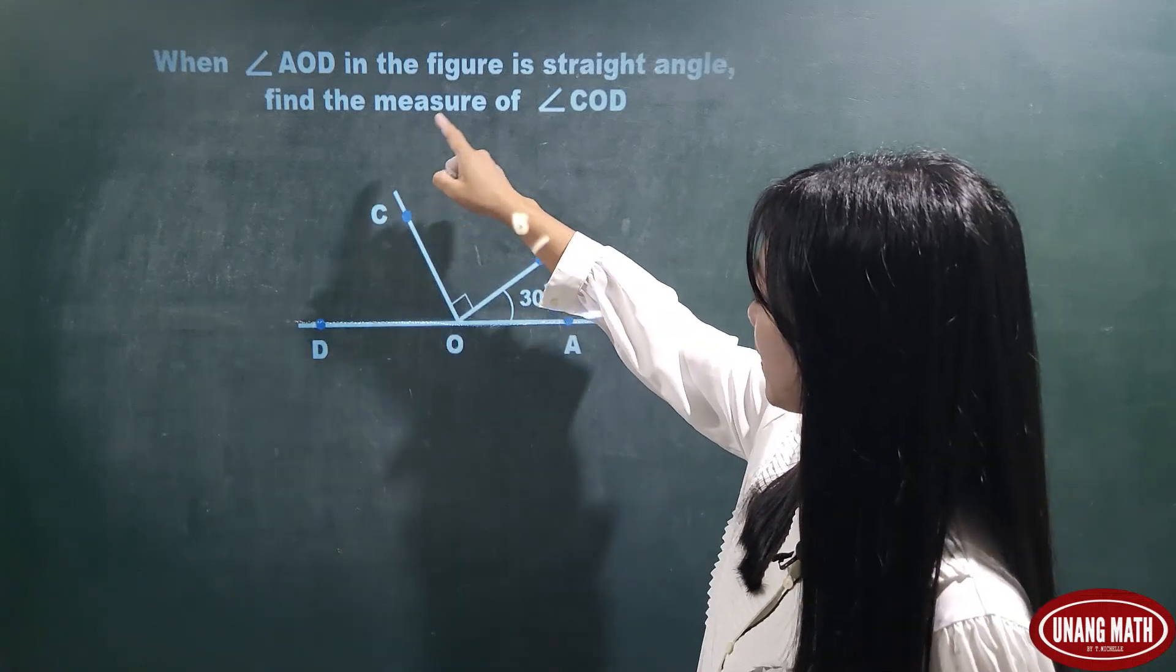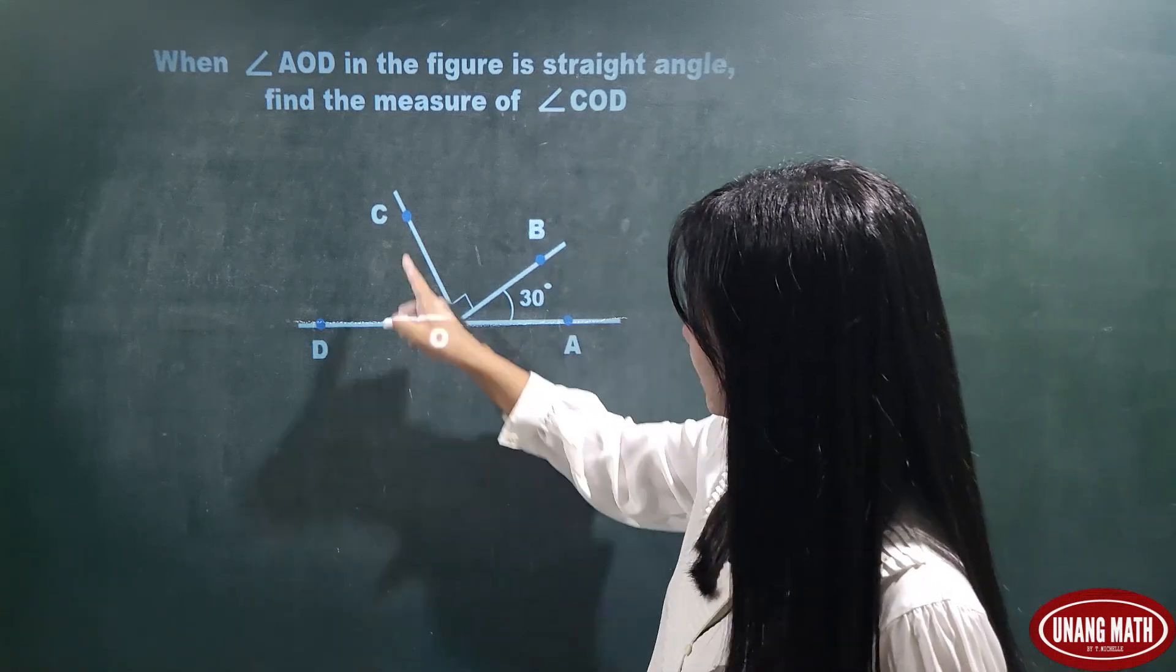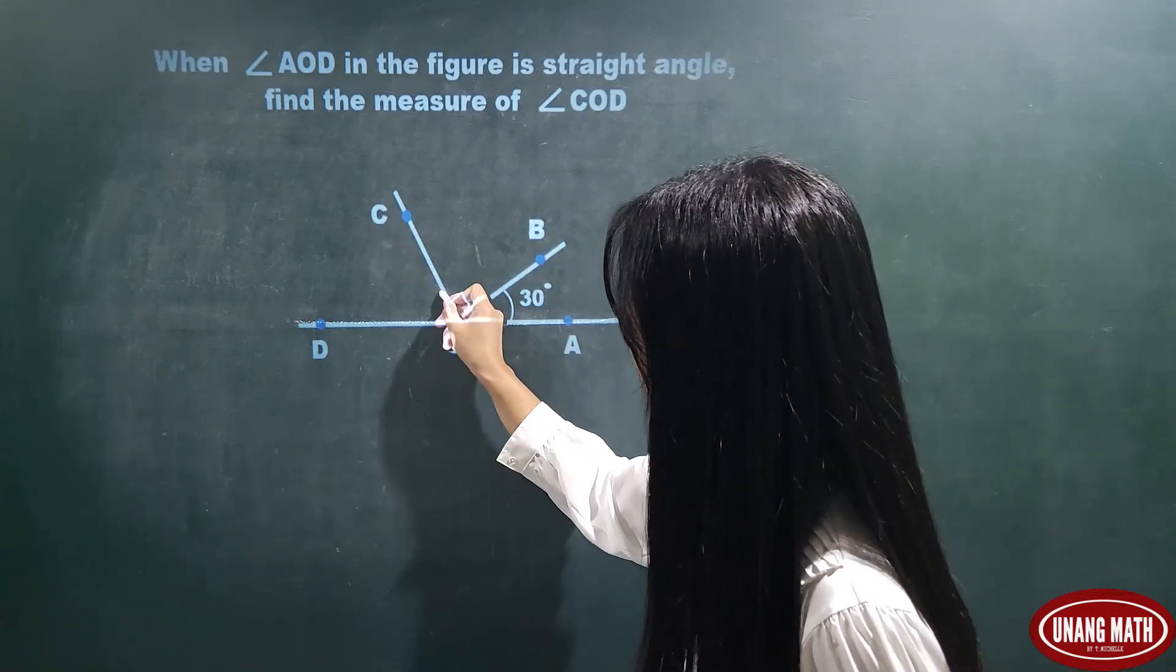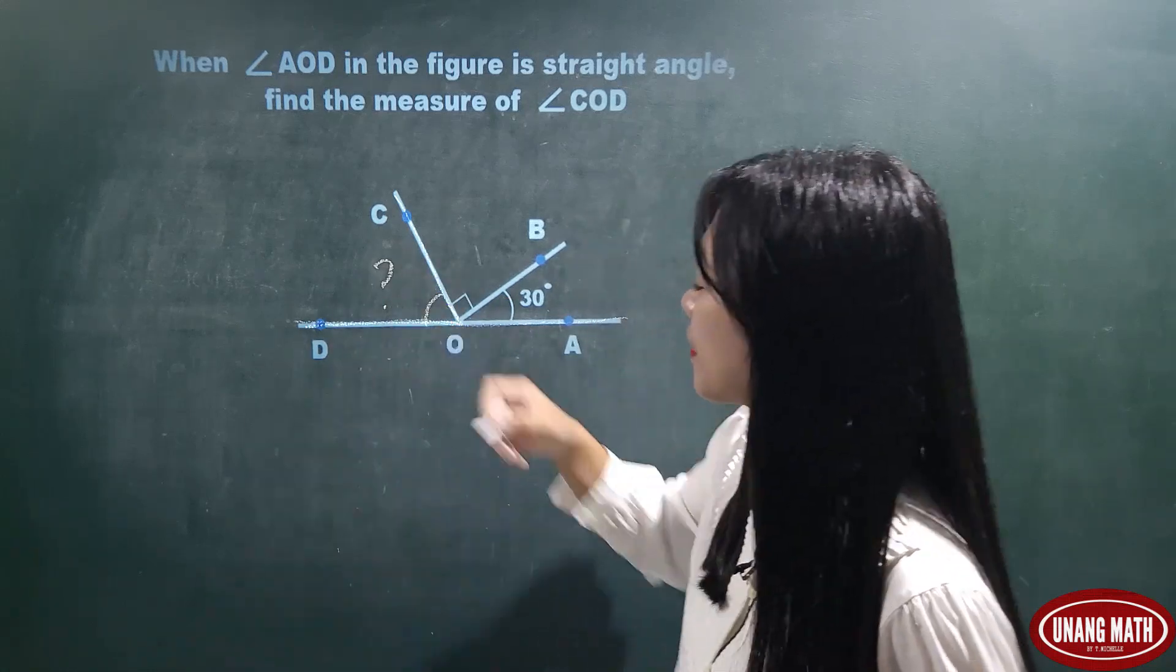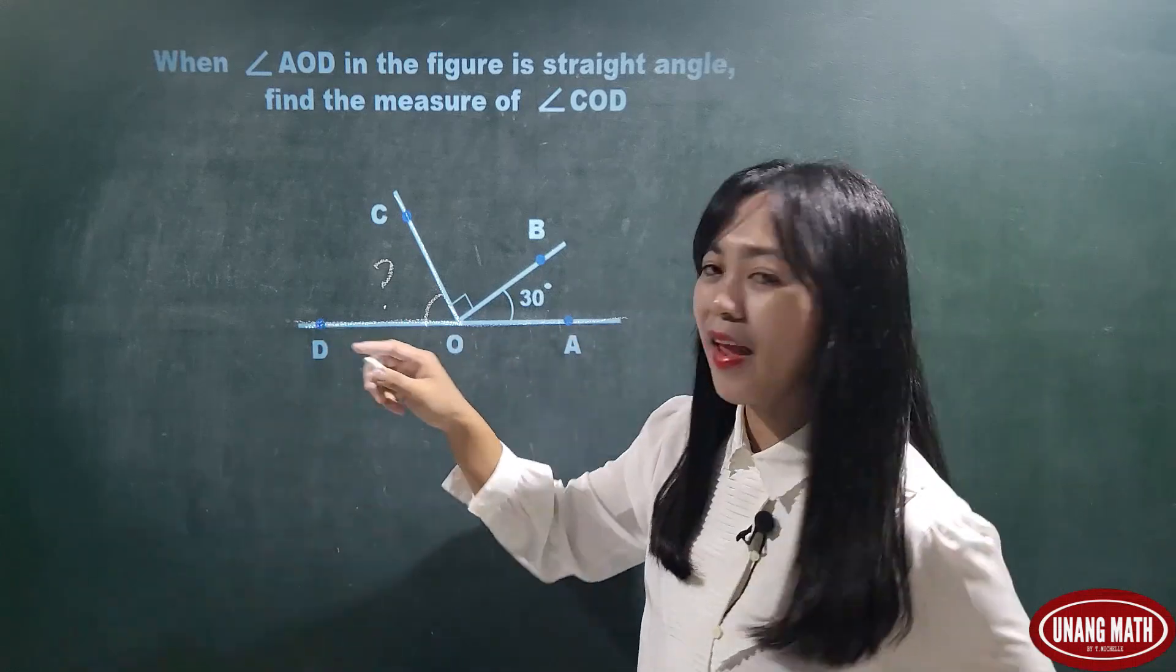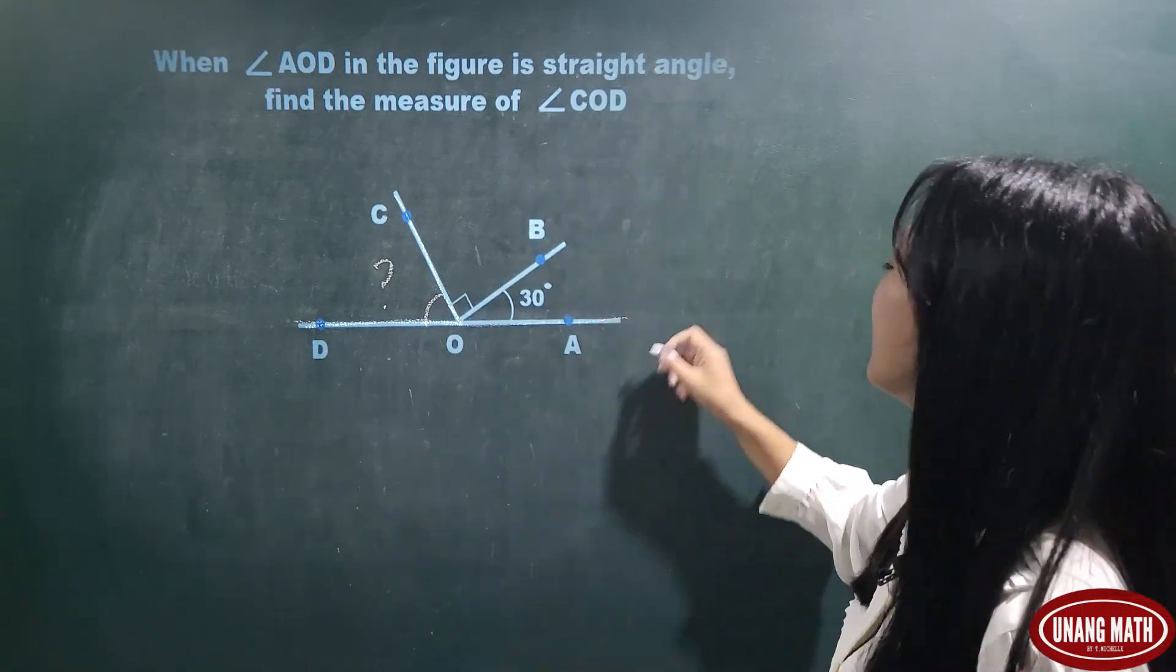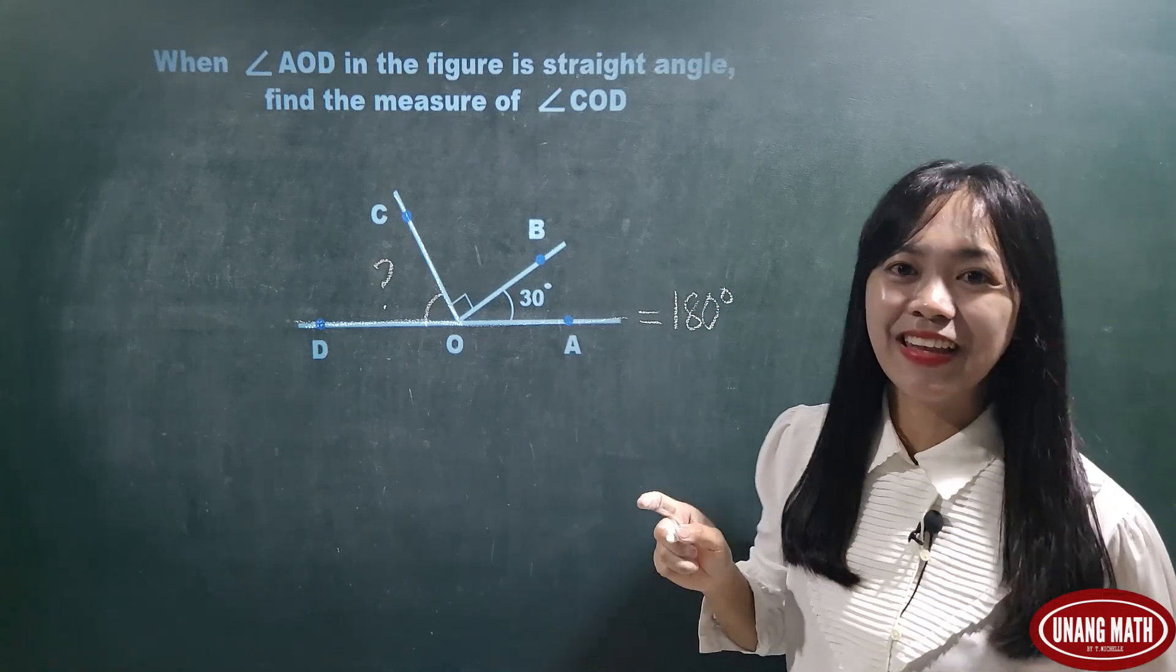We are going to find the measure of angle COD. So, angle COD is this angle. We are going to find the measure of this angle. Since angle AOD is a straight angle and we know that a straight angle measures 180 degrees.